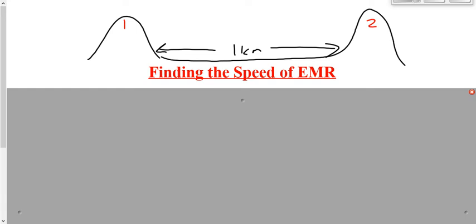Galileo standing on hill number one uncovers his lantern all of a sudden. When he does that, the light starts shining out in every direction, including towards hill number two. So the light travels from hill number one towards hill number two. When his assistant on hill number two sees the light, he uncovers his lantern. That light starts shining in every direction, including back towards hill number one. Galileo then sees the light coming from the lantern on hill number two.